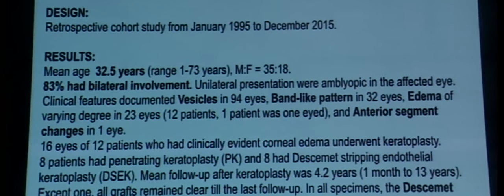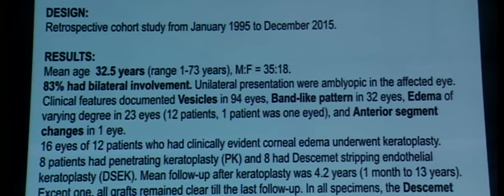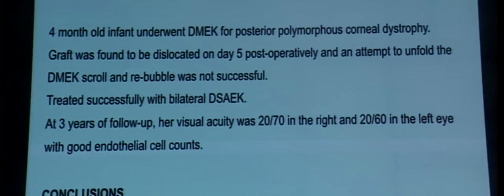Among the cases reviewed, 16 eyes had undergone either PK or DSAEK in equal numbers, and all grafts remained clear until last follow-up. For patients with diffuse, visually significant corneal edema, keratoplasty seems to be a good option. A recent paper from Dr. Rootman's group attempted DMEK in posterior polymorphous dystrophy — it was unsuccessful despite rebubbling, requiring conversion to DSAEK, after which visual acuity improved to 20/17 and 20/60 with good endothelial cell count.